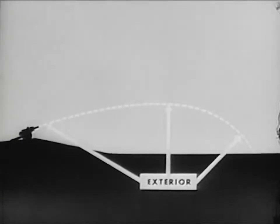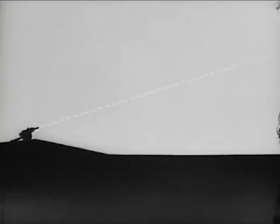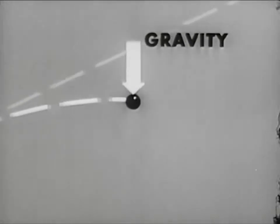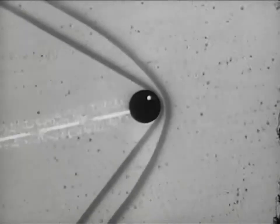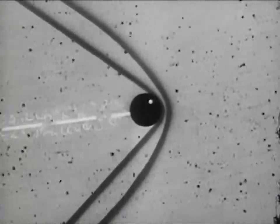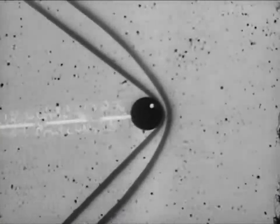Exterior ballistics is concerned with the behavior of projectiles in flight. If we could fire a cannonball influenced by no outside forces, it would continue forever in its original direction at its original velocity. If we add the force of gravity, the cannonball follows this sort of path or trajectory. By adding air resistance, we get this result, and the range is shortened still more.